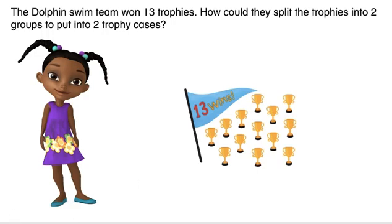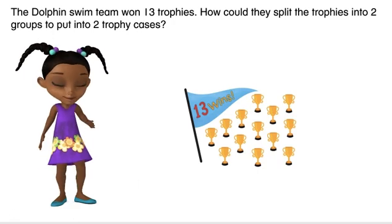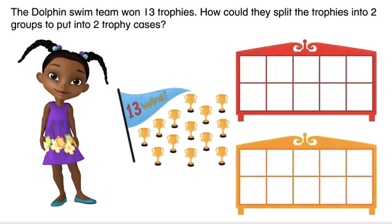The Dolphin swim team won 13 trophies. How could they split the trophies into two groups to put into two trophy cases?